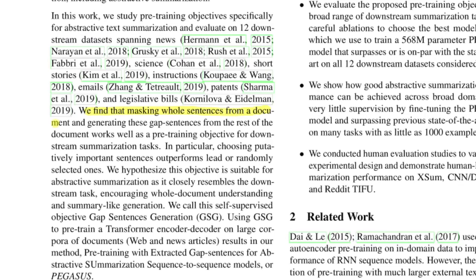Masking whole sentences from a document and generating these gap sentences from the rest works well as a pre-training objective for downstream summarization. The authors define a self-supervised objective that closely resembles the fine-tuning task of summarization: given a document with N sentences, mask a couple of sentences, and at the output reproduce those sentences. The model learns an abstract generative format based on the unmasked input sentences. They also found that choosing important sentences outperforms using leading sentences or randomly selected sentences.